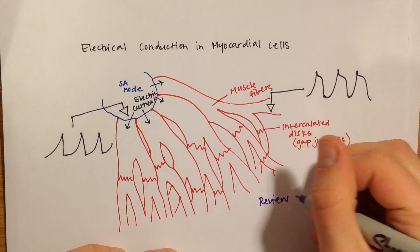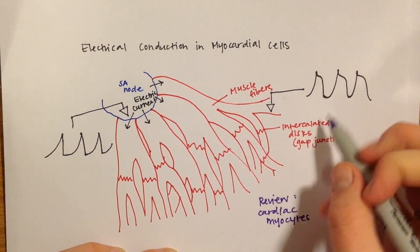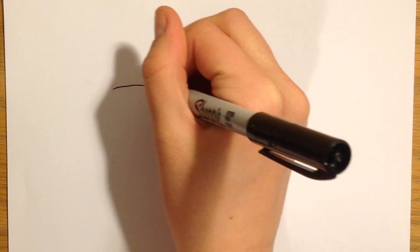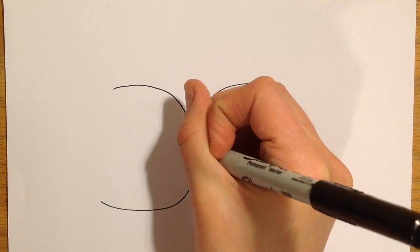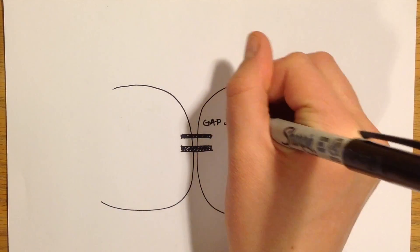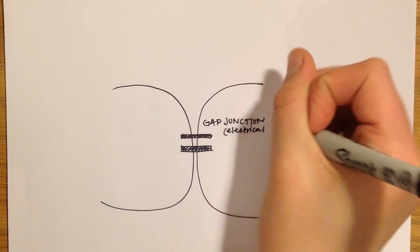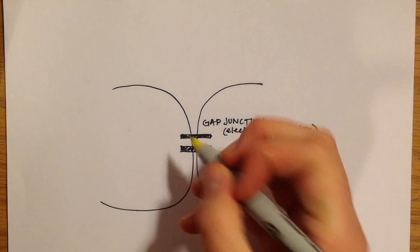Moving on, we are going to talk a bit about the intercalated discs that were mentioned in last lab's videos. In between the myocytes and these discs, there are gap junctions which allow the electrical signal to be propagated through the heart tissue. There are also desmosomes which act to hold the cells to each other.